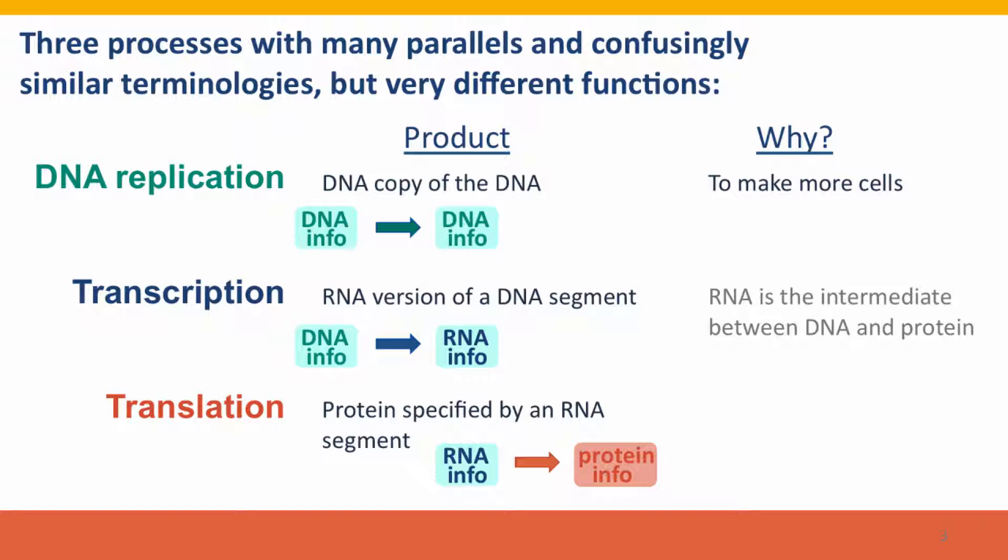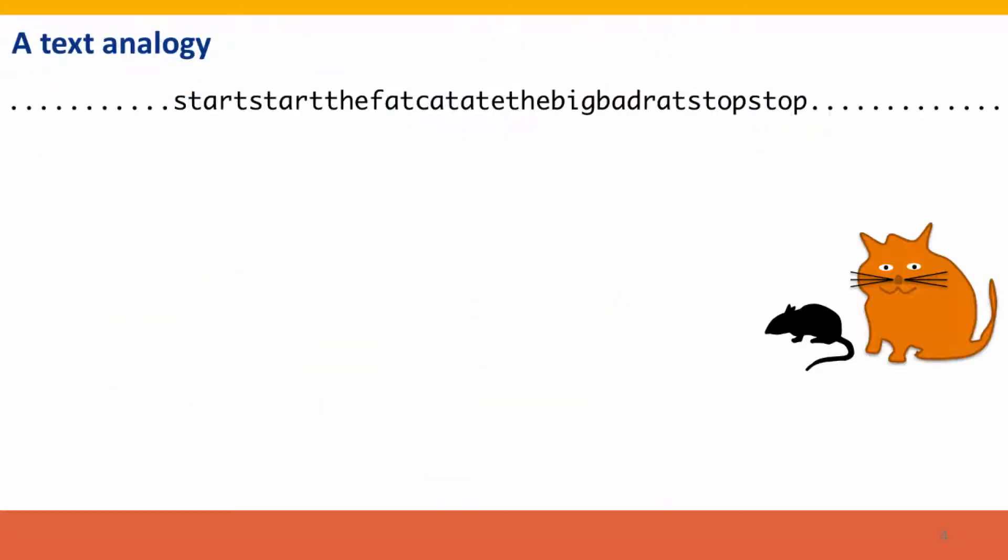Transcription produces the intermediate. For most genes, this is the limiting step that determines whether they get expressed or not, so this is where most of the regulation happens. Proteins, the products of translation, they're the machinery that gets just about everything done in the cell and thus in our bodies.